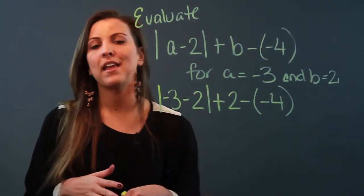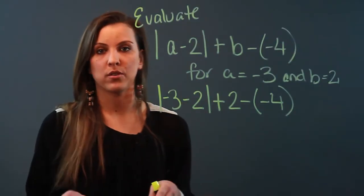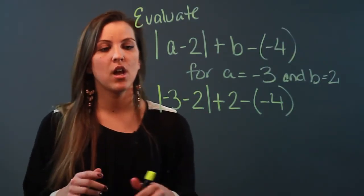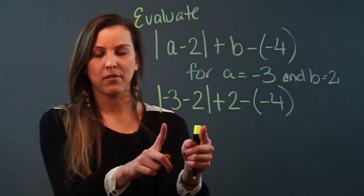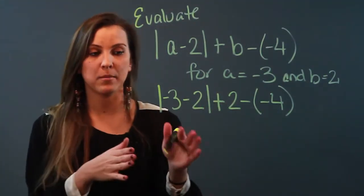I would do them first, right before I do parentheses. Treat them like parentheses—do everything inside of them, find the absolute value, and then take the bars off.